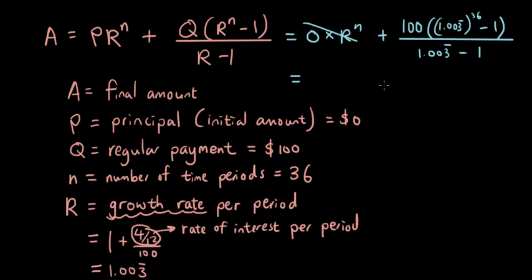Okay, so if I type all this into my calculator, well firstly the bottom part, 1.003 minus 1 is just going to be 0.003. So let me just fix that part up. So it's 100 times 1.003 recurring to the power of 36 minus 1 over 0.003 recurring. So if I type all this into my calculator...